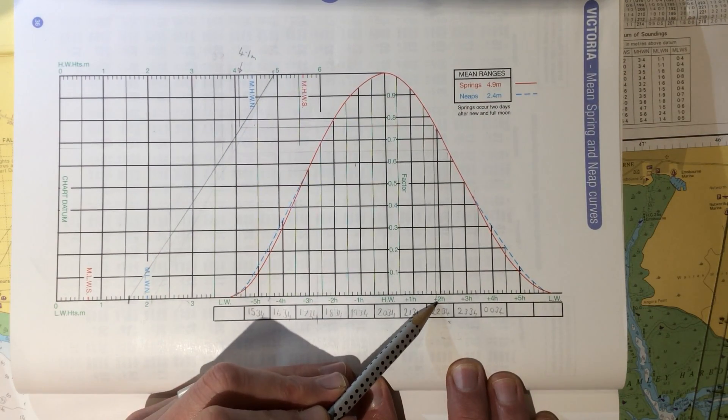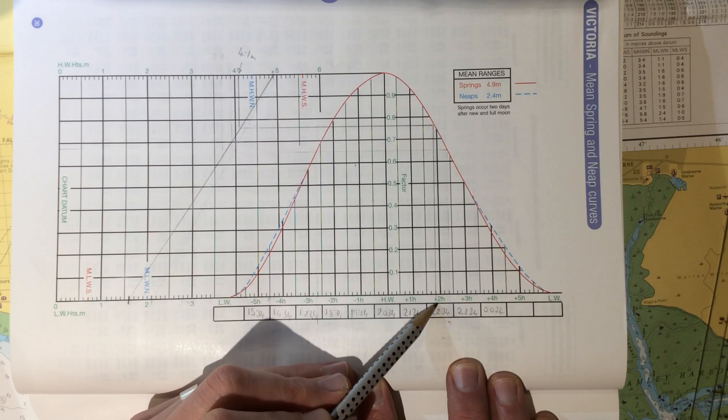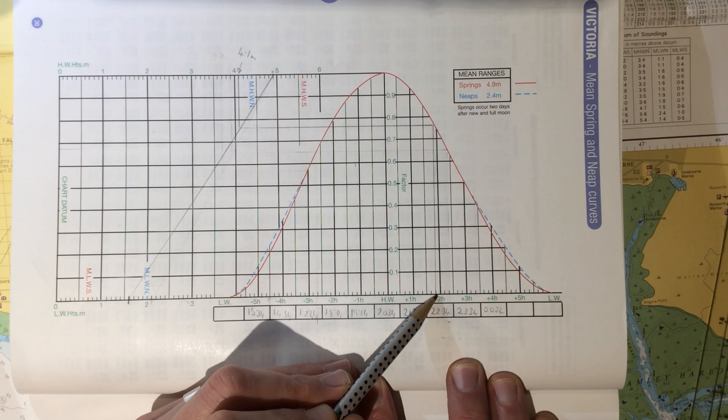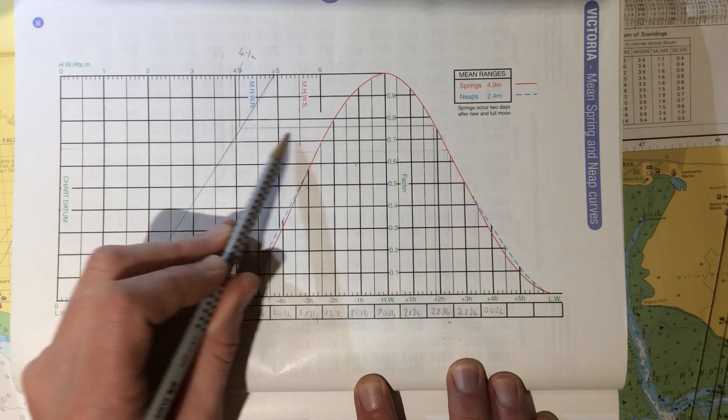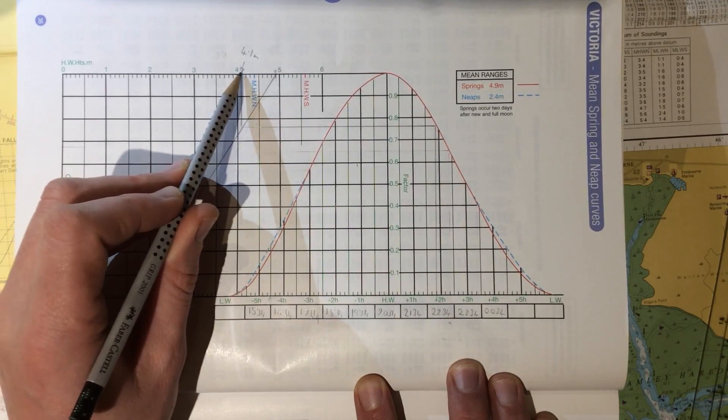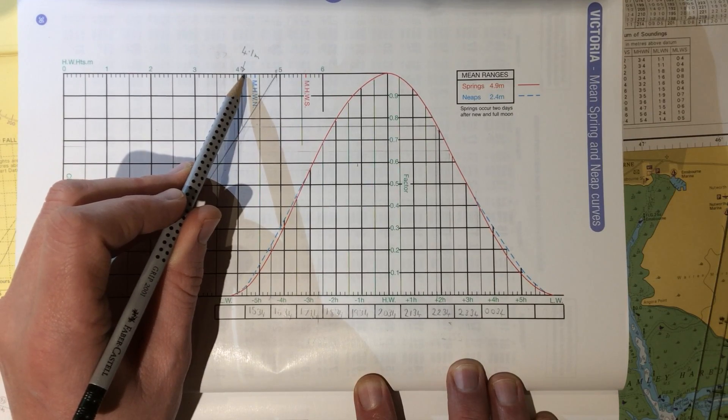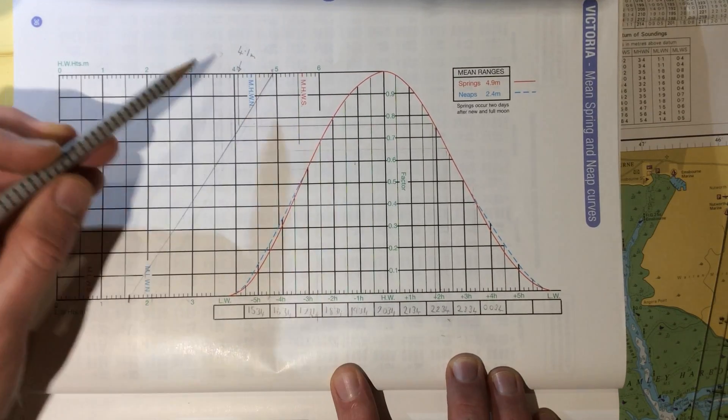You can see here we've already marked that at 10.25, which is one division before 10.34, approximately, we go up, we go across, and we go up again. And we can see that the height of tide at the time we're looking to anchor is 4.1 metres.